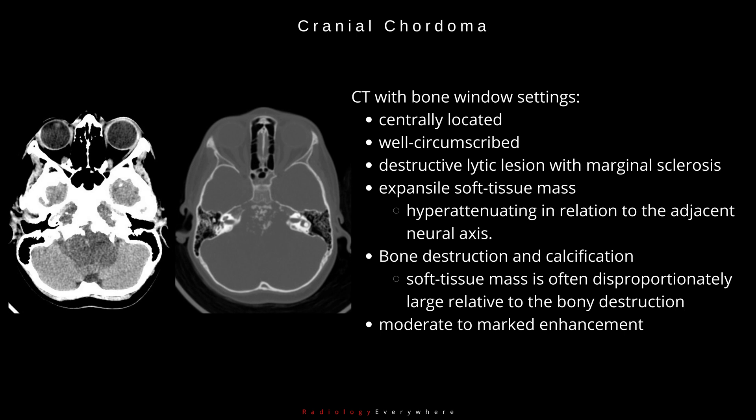On CT with bone window settings, chordomas appear as centrally located, well-circumscribed, destructive lytic lesions with marginal sclerosis and an expansile soft tissue mass. They are hyperattenuating relative to the adjacent neural axis, with bone destruction and calcification. The soft tissue mass is often disproportionately large relative to the bony destruction, and there is moderate to marked enhancement.